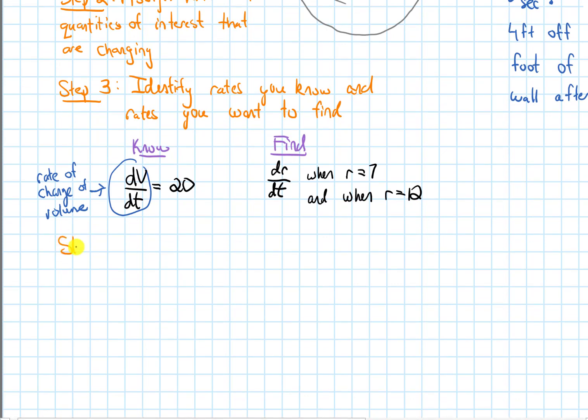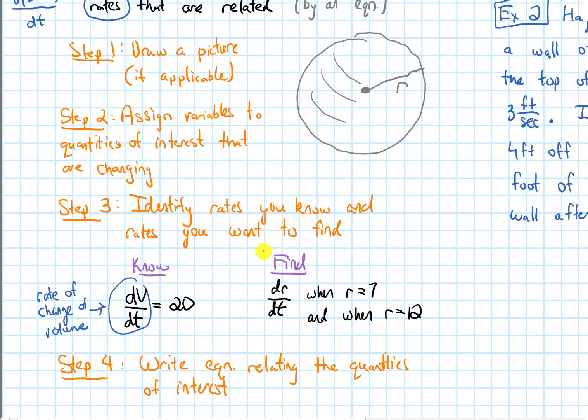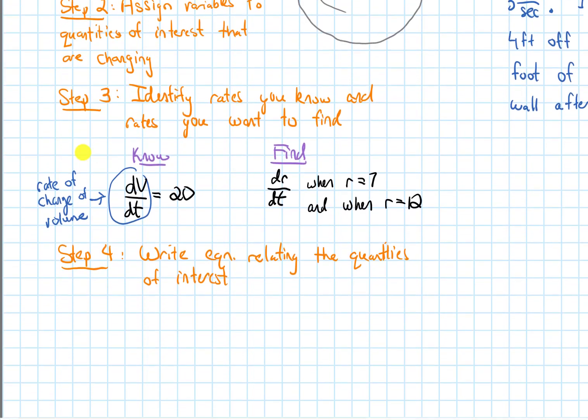We are on to step four. Step four is to write an equation relating the quantities of interest. In this case, one of the quantities was the radius because I want to find dr/dt. The other quantity is the volume because I know dV/dt. The equation I'm going to use is for the volume of a sphere. Going back to geometry, this is V equals 4/3 π r cubed.